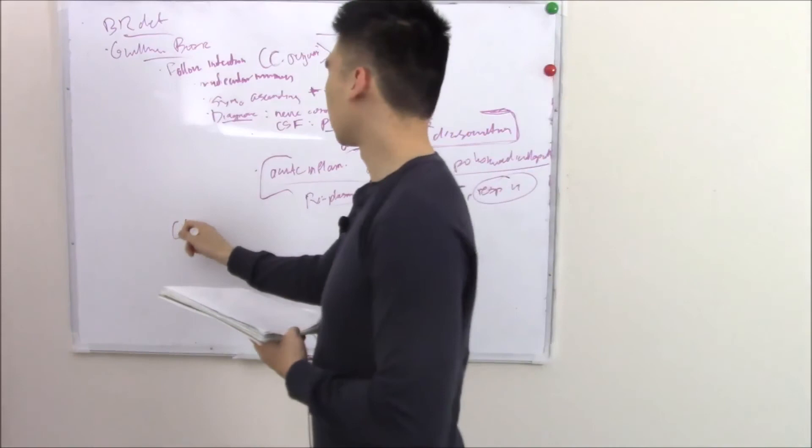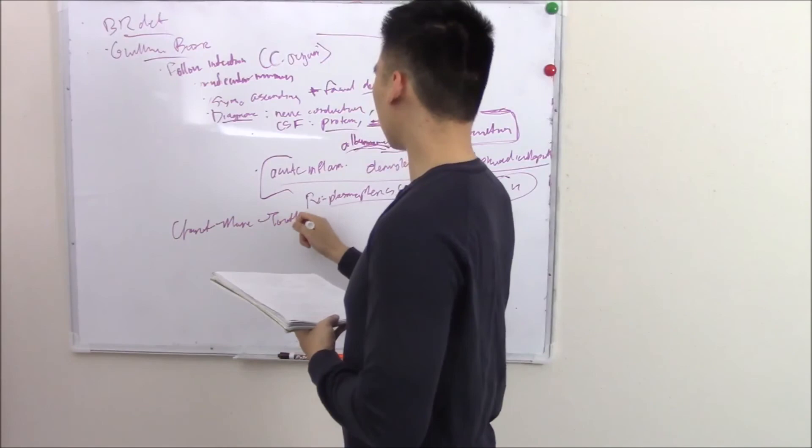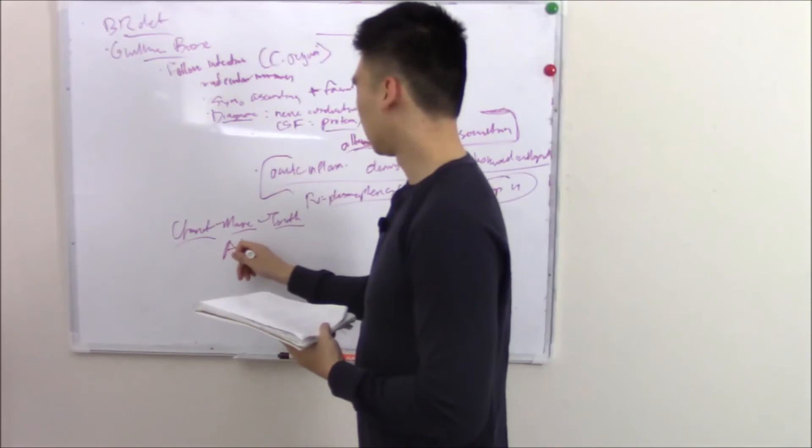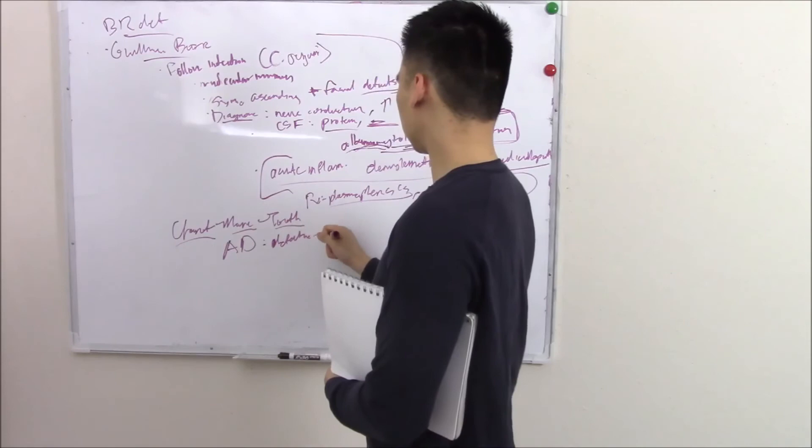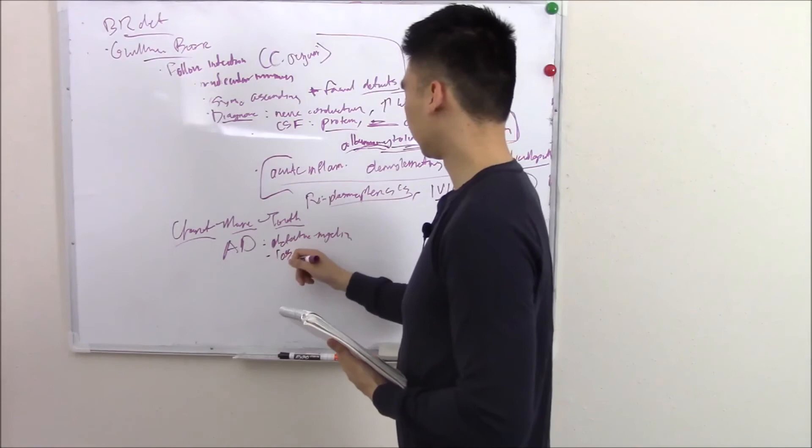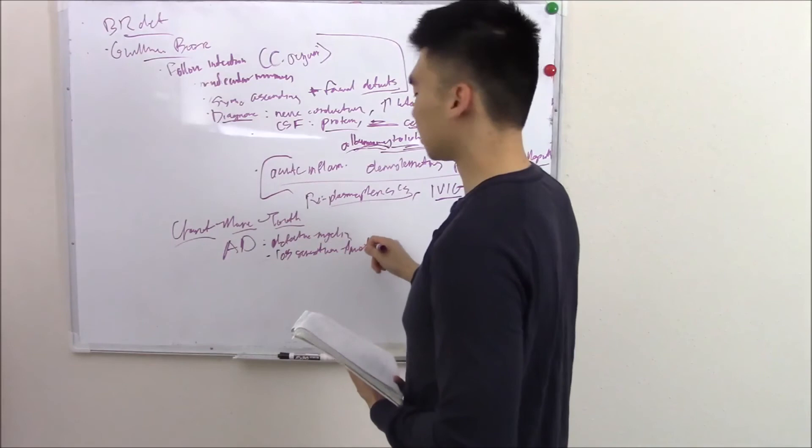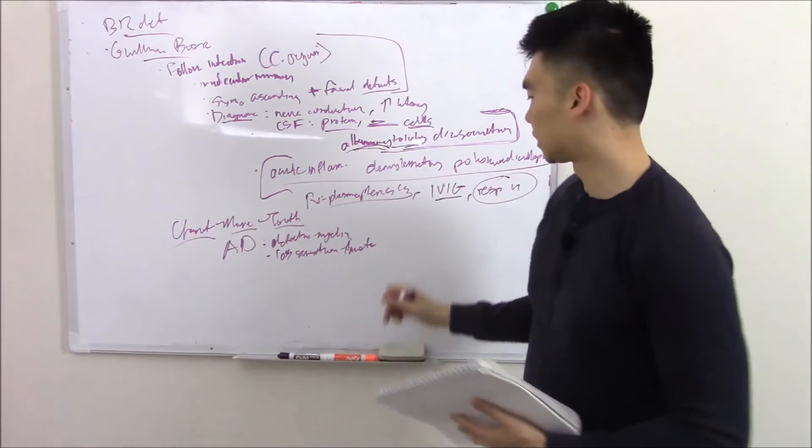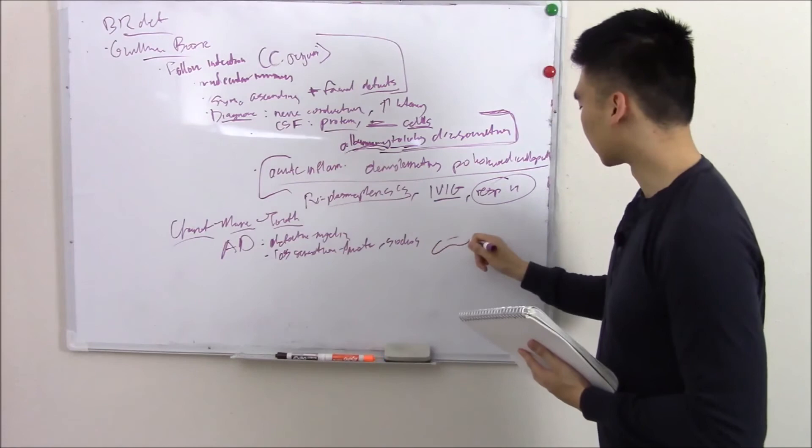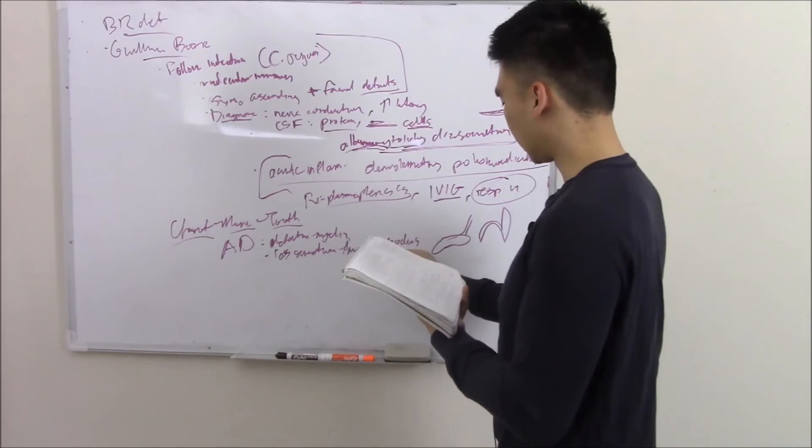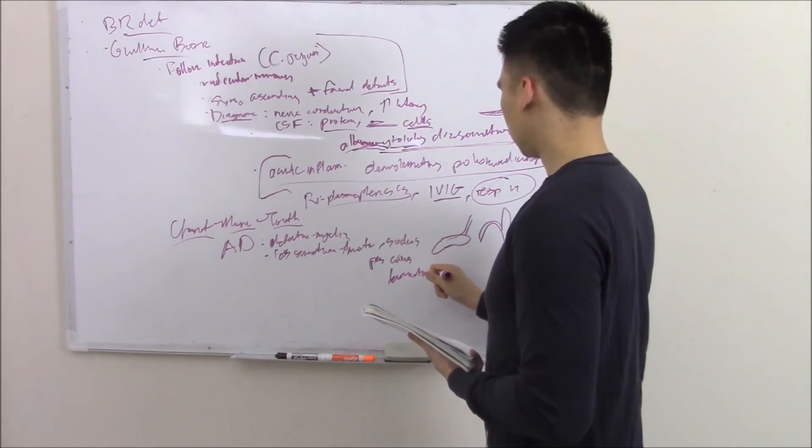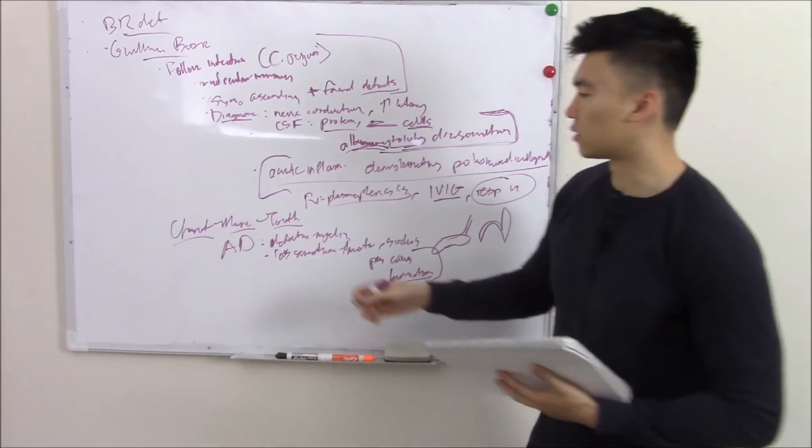Next up is Charcot-Marie-Tooth, named after the three people that found this disorder. It's a rare inherited disorder, autosomal dominant. It's a group of disorders with a group of defects, but one of the defects is defective myelin. Patients will show that with loss of sensation, motor deficits, all that good stuff. That's pretty nonspecific. Some more classical findings is skeletal deformities—scoliosis, high arching foot. Regular foot looks like this with an arch, and high arching foot is incredibly high. We call that pes cavus. They're going to have hammer toes. The feet really like to be affected—hammer toes, high arching foot. You're thinking of Charcot-Marie-Tooth.